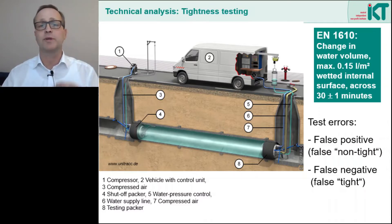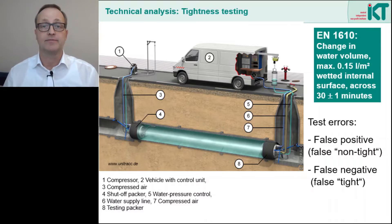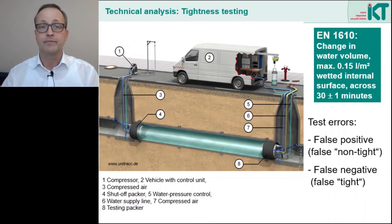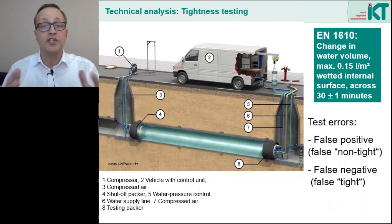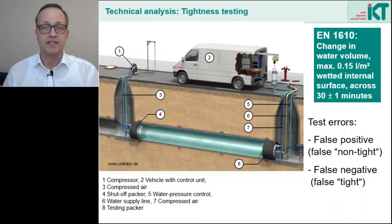Here we distinguish between two cases: false positive and false negative results. In the case of false positives, the pipeline fails the test even though it is tight — the leakage has been identified although there is none. In the case of false negatives, the pipe passes the test even though it is leaking — so we assume there are no leaks, although there are. Both cases are unpleasant. In the first case, a sewer section is not accepted even though it is okay. In the second case, everyone is happy with the result, but there is now an undetected risk waiting underground.